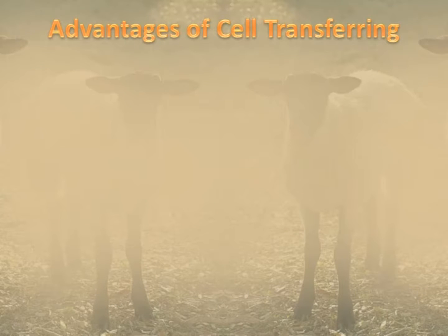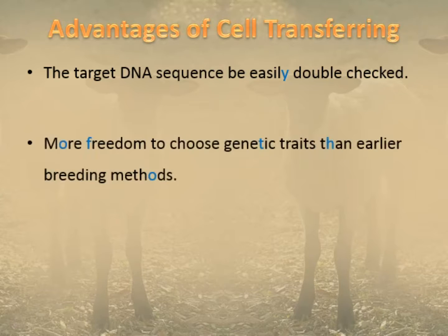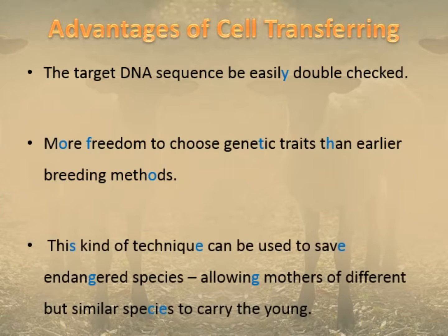The advantages of cell nuclear transfer include: the DNA sequence can be checked before it is put into the new mother animal; we have more freedom to choose genetic traits than by earlier methods of breeding animals together; and we can use cell transfer to help save endangered species, because if an endangered species has a cousin — a similar animal — mothers of that cousin species may be able to bear the young of the endangered species.